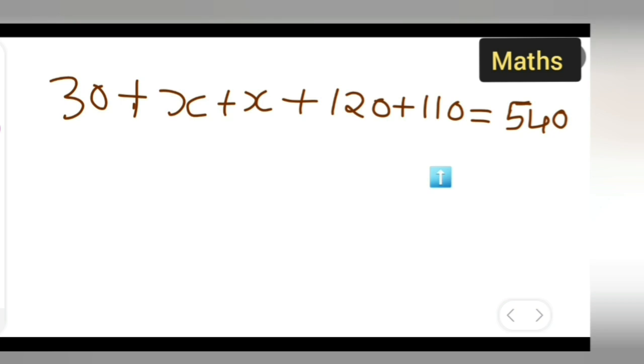So if you add 120 plus 110 plus 30, what are you going to get? It will be 220, 230, and 260, right? So you can write down 260 plus 2x. How many x variables are there?